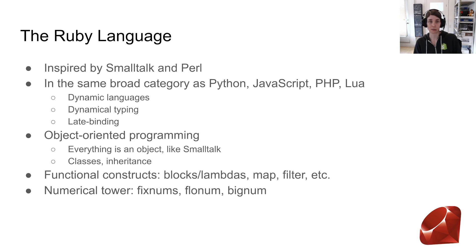Ruby is a language that was inspired by Smalltalk and Perl. It's in the same broad category as Python, JavaScript, PHP, Lua, etc. — dynamic languages that have dynamic typing and late-binding. It's an object-oriented language where everything is an object, like in Smalltalk, and it also has classes and inheritance, as well as functional constructs like blocks, maps, filter, etc. And it has a numerical tower with fixed-point numbers, floating-point numbers, and big numbers.